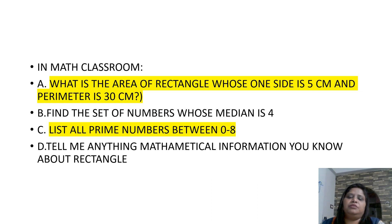List all prime numbers between 0 to 8. That is a closed-ended question. And tell me anything mathematical information you know about the rectangle. That is an open-ended question. So, in closed-ended, A and C, these are the closed-ended questions.